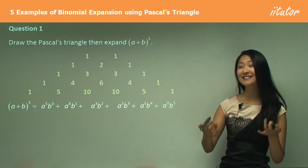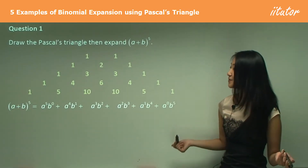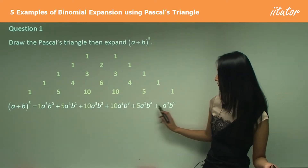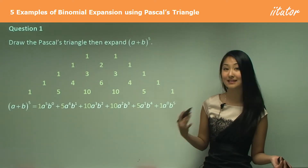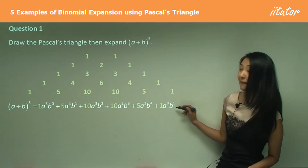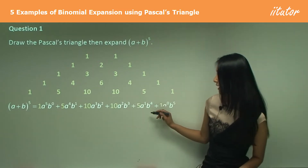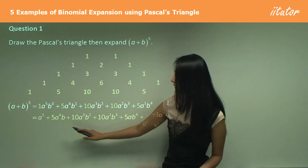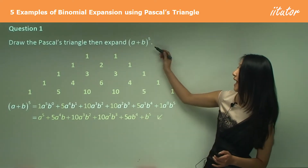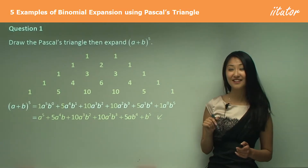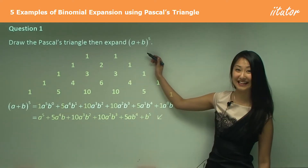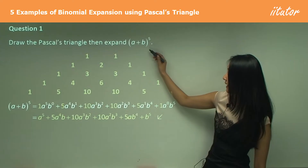The second step is to put in the coefficients — super simple. One goes there, then 5, 10, 10, 5, 1. And then lastly, simplify it. So that just becomes a to the power of five, and this will just become b to the power of five. Rewrite it out simplified, and you've just done the expansion for (a + b) to the power of five — in really only two lines, which is much easier than trying to expand this any other way.